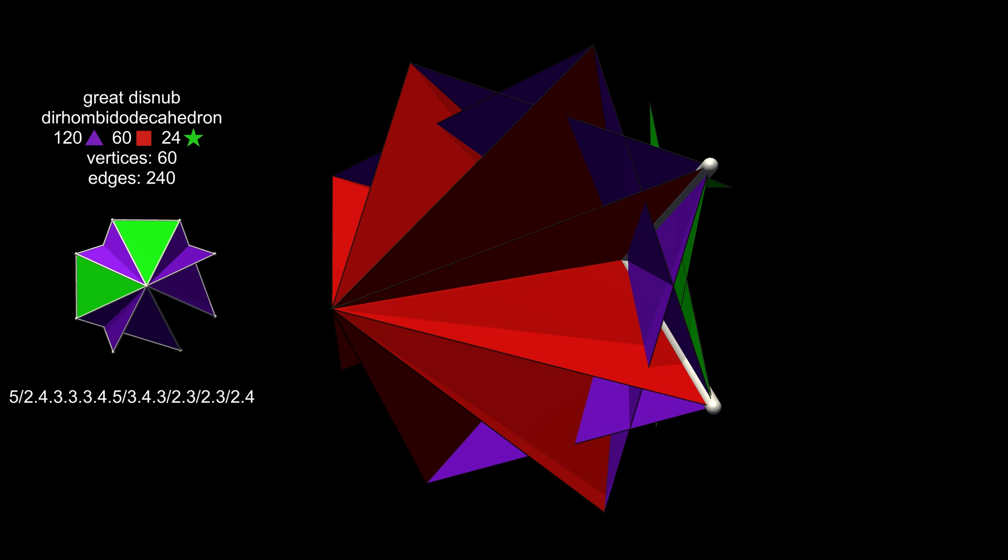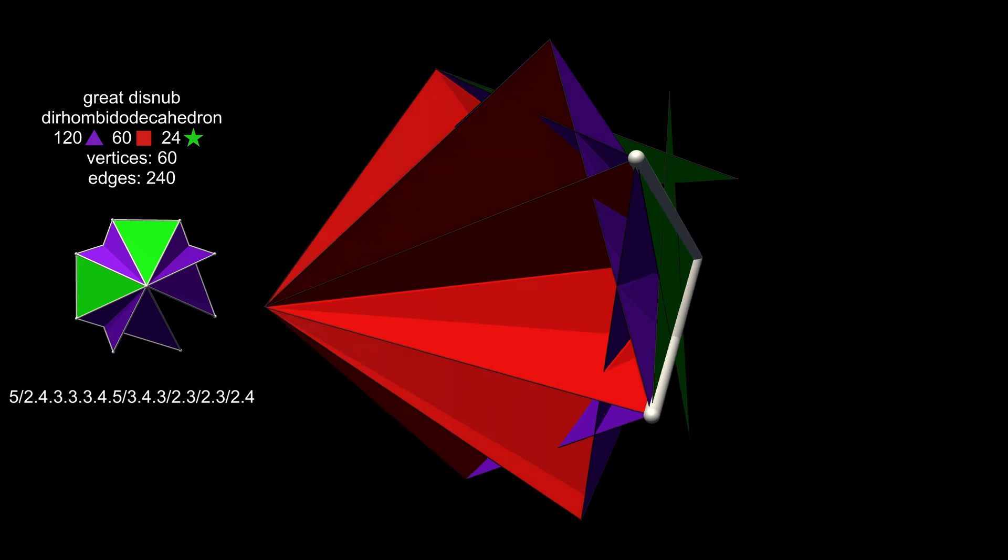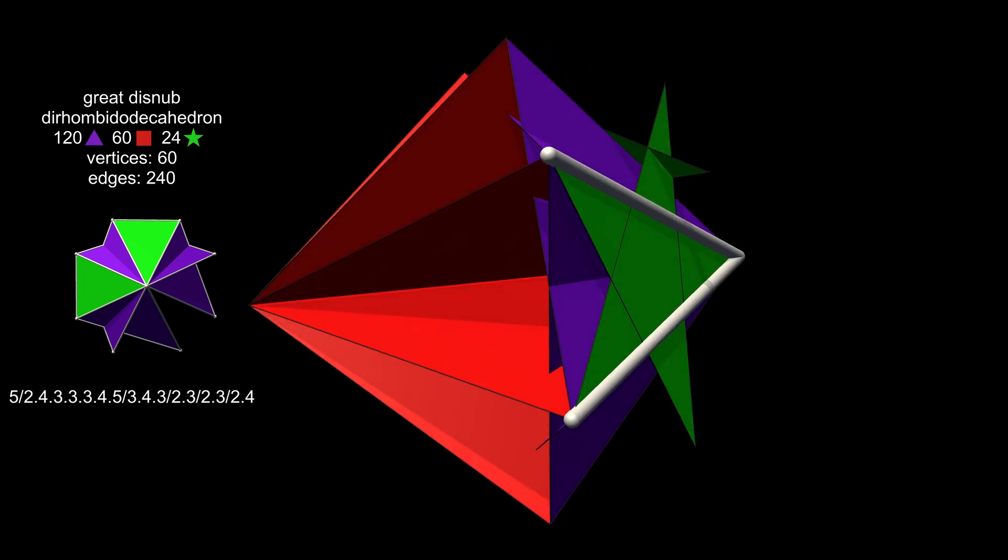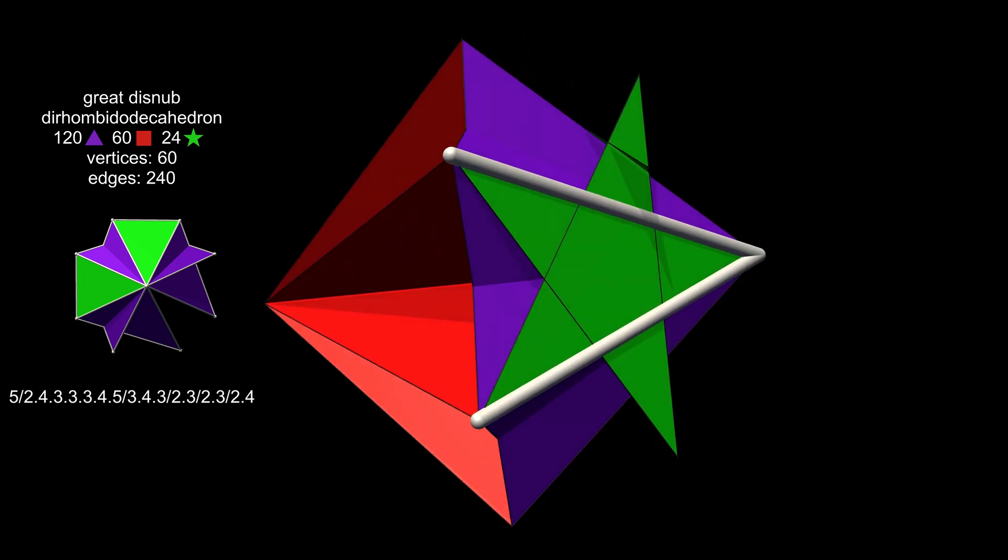Similarly, this edge also borders on four faces. In fact, there are two more double edges, so although 12 faces border the vertex, only eight edges separate them.